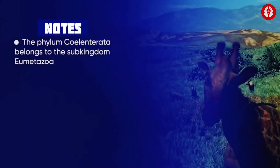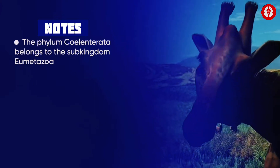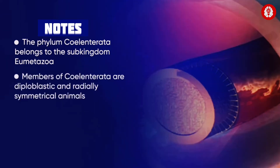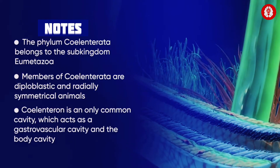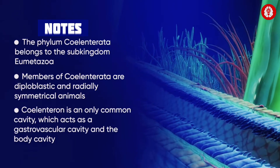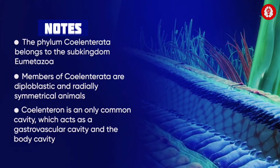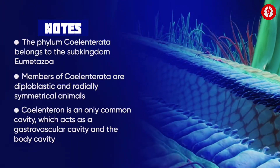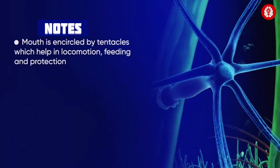The phylum Coelenterata belongs to the sub-kingdom Eumetazoa. They are diploblastic and radially symmetrical animals. There is a single common cavity which acts as a gastrovascular cavity, and the body cavity is called the coelenteron.